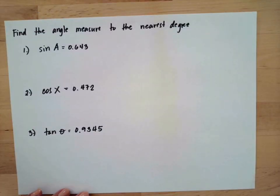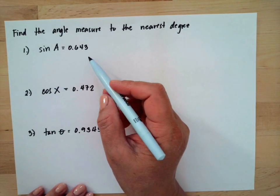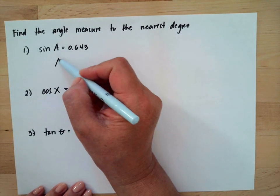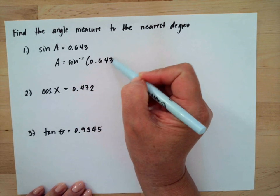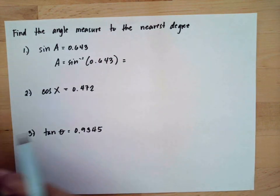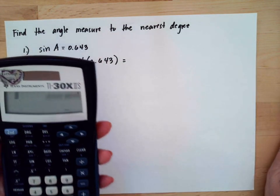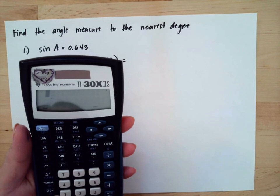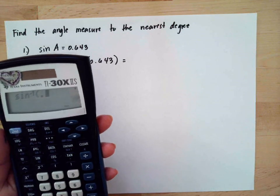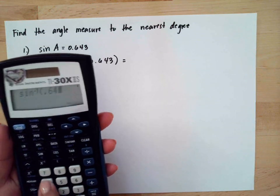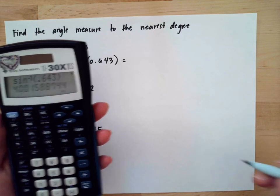Next problem: find the angle measured to the nearest degree. Given the value, what you need to do is use the inverse. Using the calculator, press second, then sine, then type 0.443. That will be equal to 40 degrees.